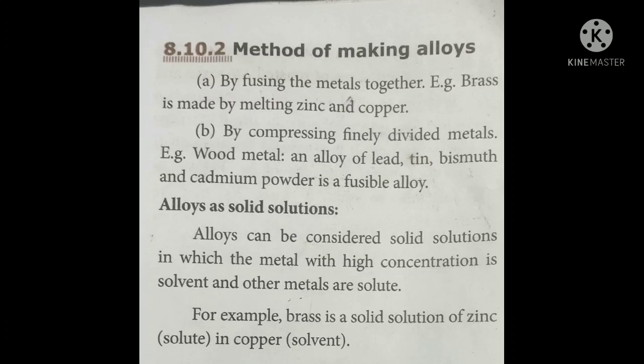Alloys as solid solutions — usually alloys are prepared as solid solutions. In this, the composition present in higher amount by weight is called the solvent and the lesser amount by weight is called the solute. For example, if you are using brass — the alloy of copper — if copper is taken as 80% and zinc as 20%, then the 80% copper is the solvent and the remaining 20% zinc is called the solute.